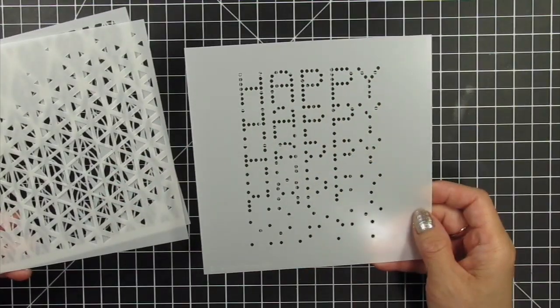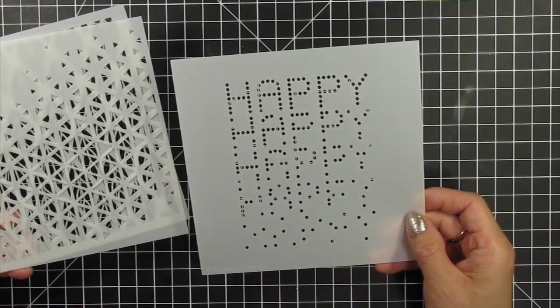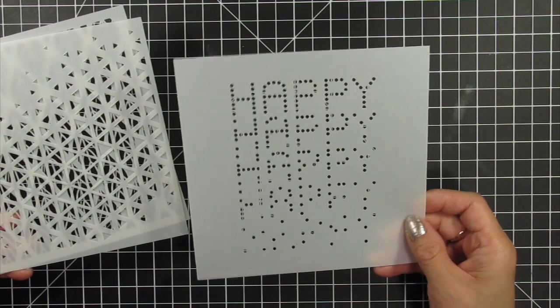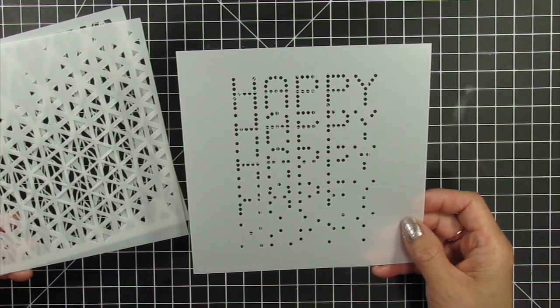The first stencil I'll be using is the Falling Happy stencil. I fell in love with this one the moment I saw it. I love that there's a full happy at the top, and then the letters seem to disintegrate or disappear and scatter towards the bottom of the stencil.